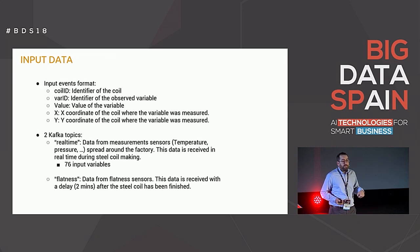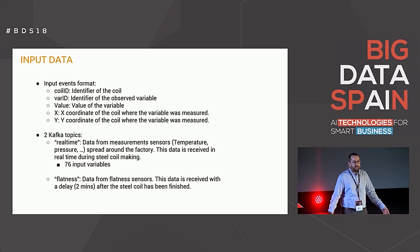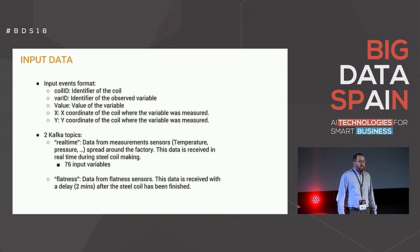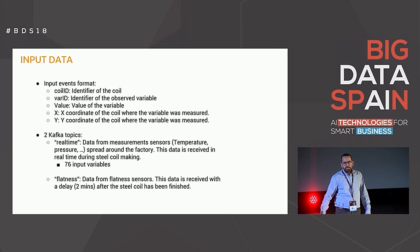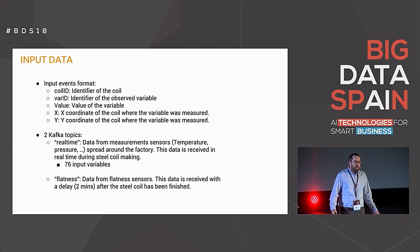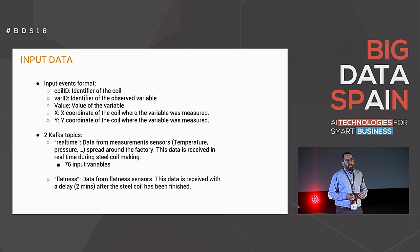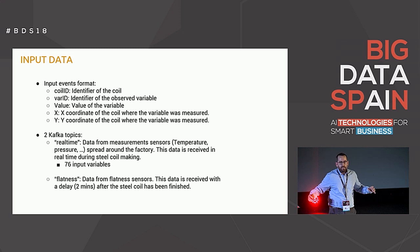The events we receive have this format: Coil ID, the identifier of the coil; Bar ID, identifying each separate variable, which could be a variable for temperature, pressure, or other important magnitudes during processing; Value, what the value of this variable was for the coil; and Coordinate, the position of this measurement within the complete piece of steel.